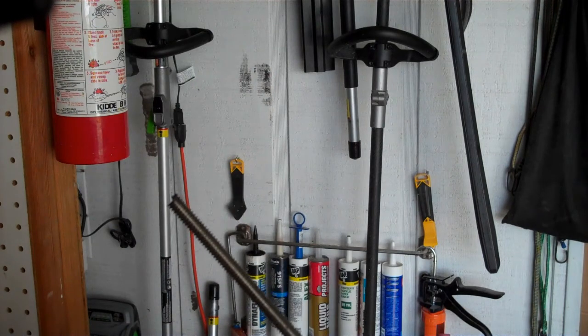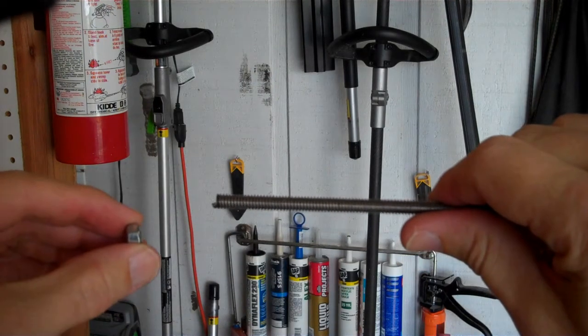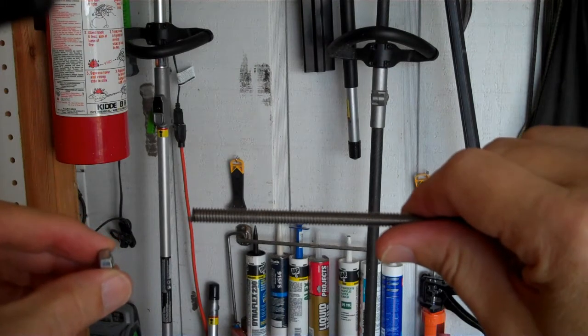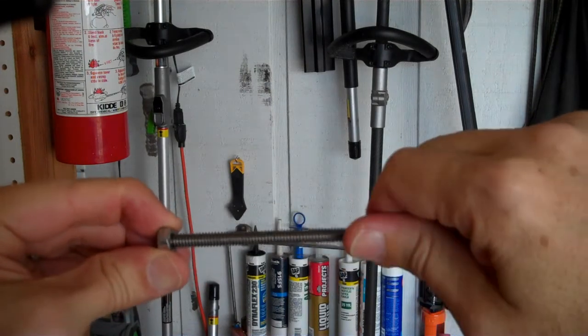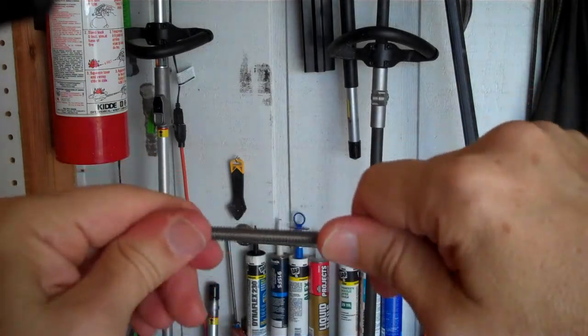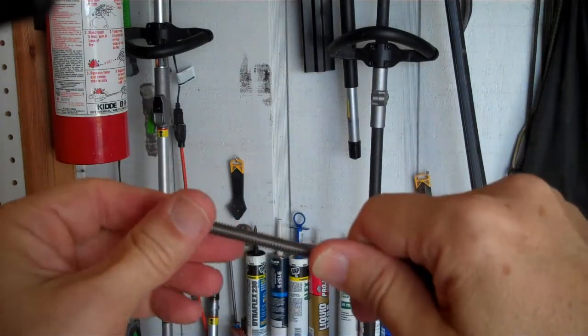And you can see how it kind of bends those threads over. You probably want to knock that over with a file. But you could still thread this on to the rod without even doing that if you needed to.